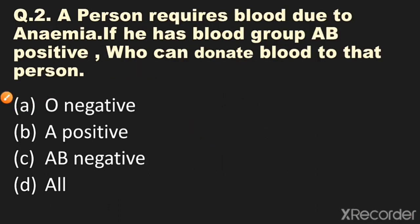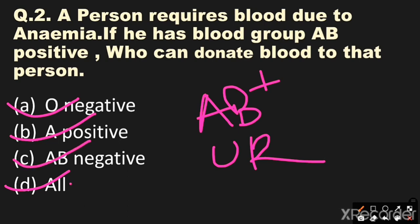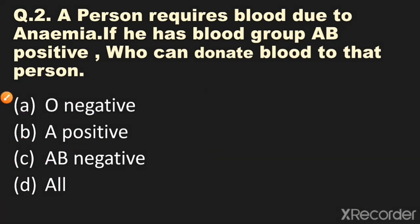Question number two: A person requires blood due to anemia. If they have blood group AB positive, who can donate blood to that person? Options: A) O negative, B) A positive, C) AB negative, D) all. The answer is all. AB positive is a universal receiver — it can receive blood from any other blood group, including A negative, A positive, AB positive, AB negative, O negative, A positive, and AB negative.